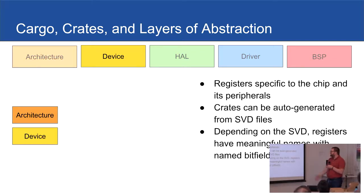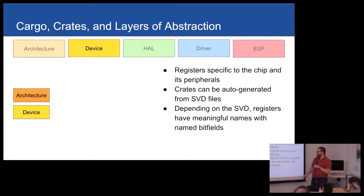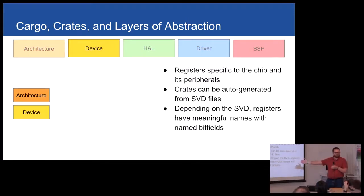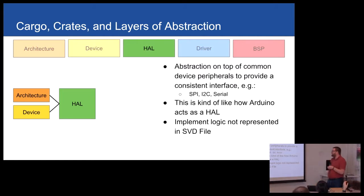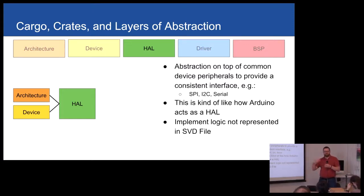Next is a device crate, or sometimes called a chip support crate — this is for registers specific to the chip and its peripherals, like your analog-to-digital converters, timers, et cetera. Usually these crates are 90% auto-generated. Vendors usually provide what's called an SVD, which is a document that basically lists out all the peripherals, what the registers are, what the bit fields within those registers are, and what values those can have. Next we've got the HAL, Hardware Abstraction Layer.